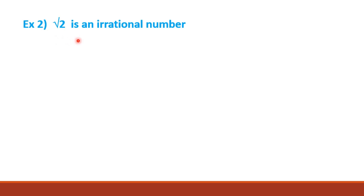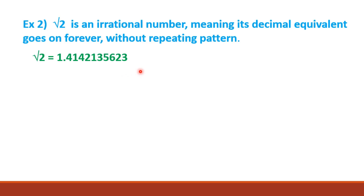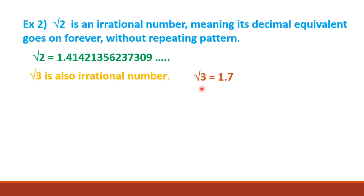Example 2: Square root of 2. The square root of 2 is an irrational number, meaning its decimal equivalent goes on forever without repeating. Square root of 2 is equal to 1.41421356237309 and so on. Square root of 3 is also irrational: 1.73205080 and so on. There are infinitely many digits after the decimal point, exhibiting a non-terminating and non-recurring pattern.